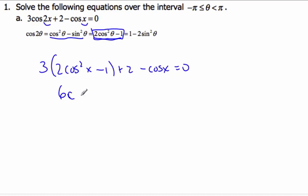I'm just working through the algebra now. Minus 3 plus 2 will be minus 1 minus cosine x.